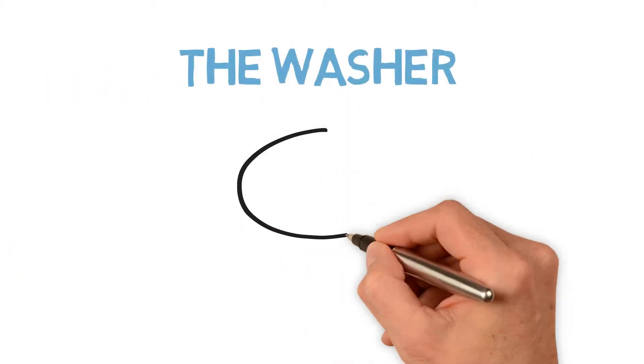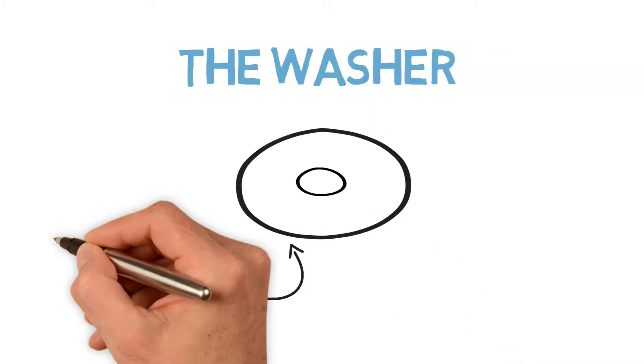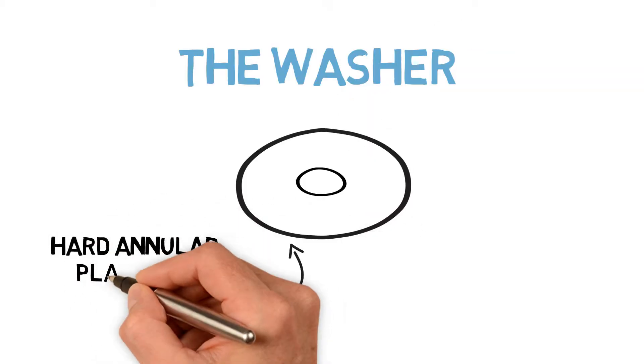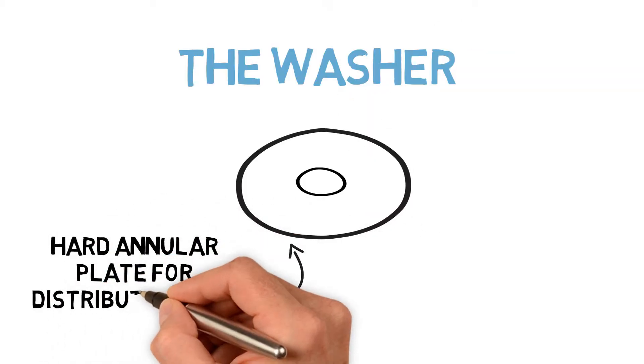The last parts are the washers. These are annular plates typically made of a very stiff material, which help spread the load acting on the bolt head and nut over a larger area.